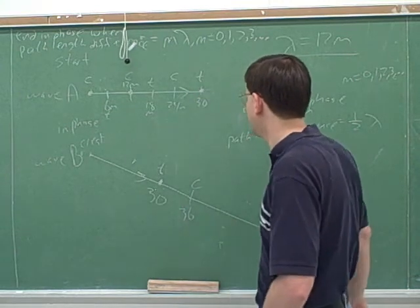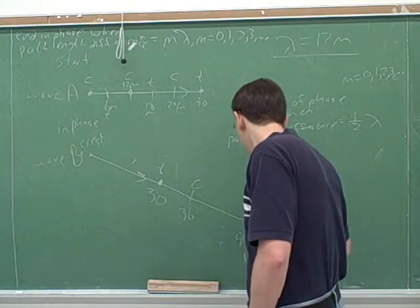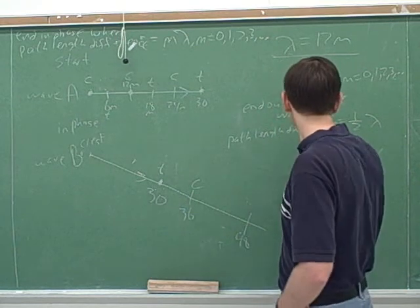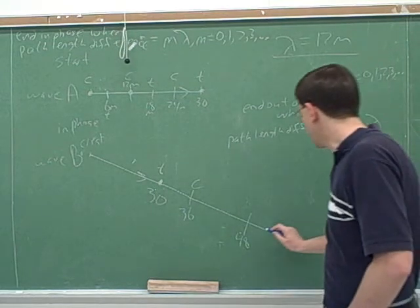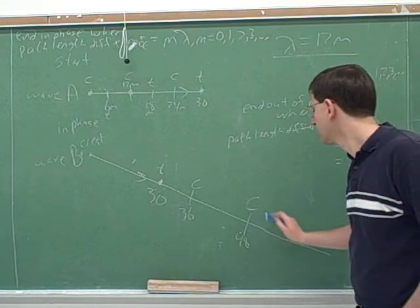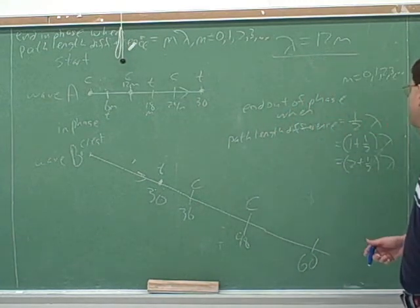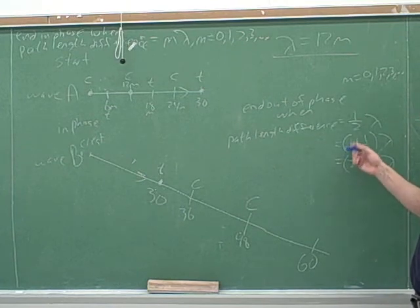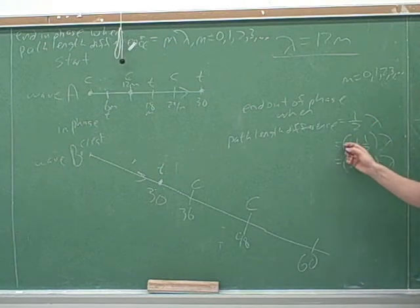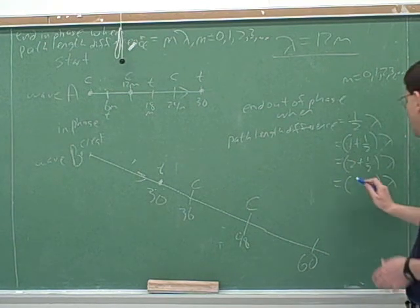Let's keep wave B going. What's the next point that wave B will be totally out of phase with wave A? 48 meters — you added another full wavelength to where it was. So one and a half wavelengths difference. And the next point would be 60, with two and a half wavelengths difference. They get out of phase when you let one of them go half a wavelength longer than the other. If you keep adding whole wavelengths to one of them, it's going to stay out of phase. The next in the series would be three and a half lambda.